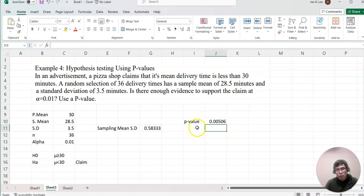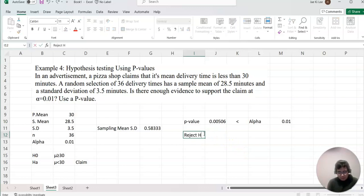We got p-value equals 0.00506. Alpha equals 0.01. We compare p-value and alpha. Alpha is bigger than p-value, so we reject H-0.